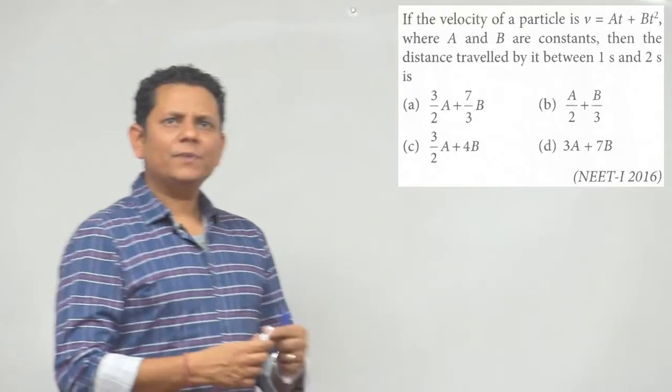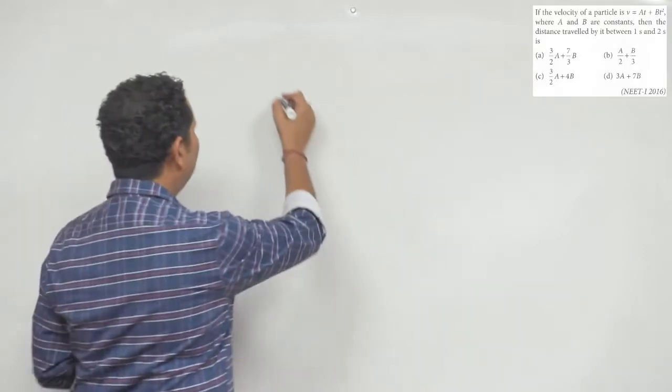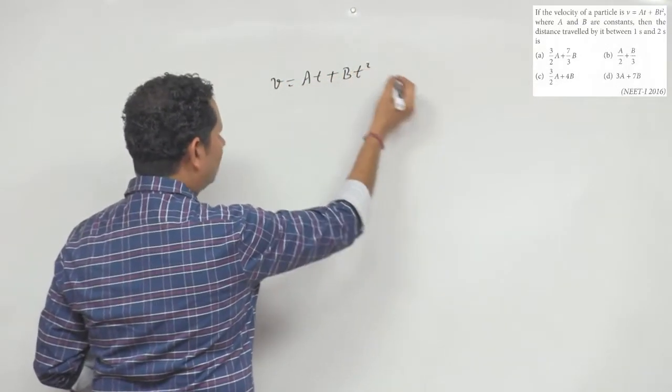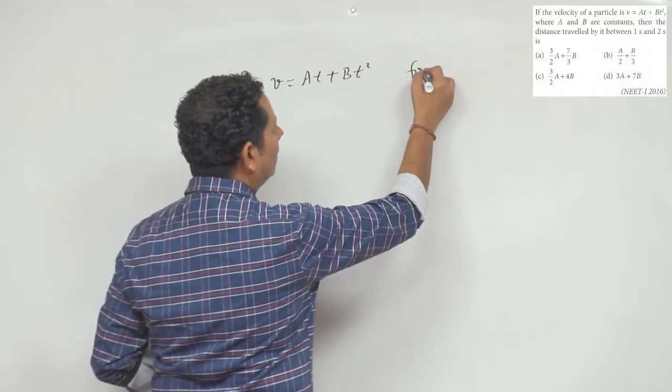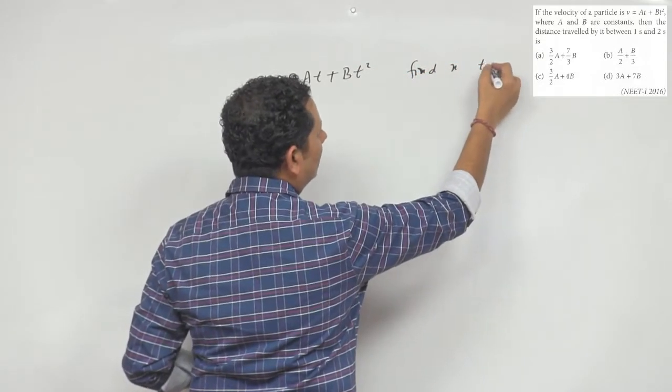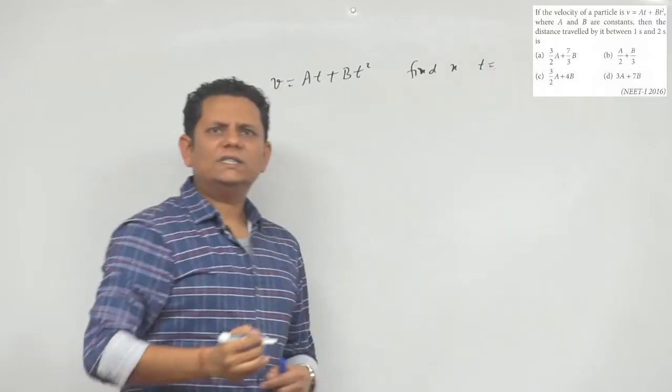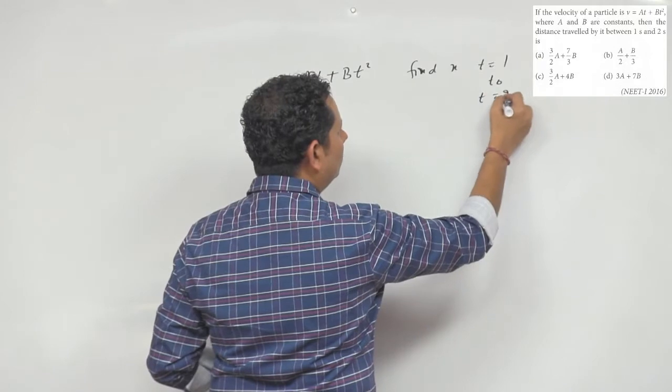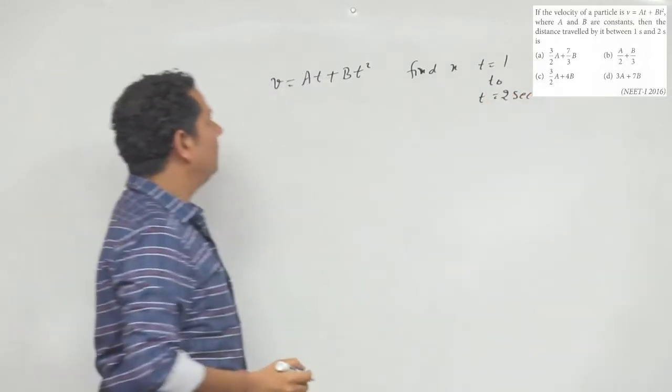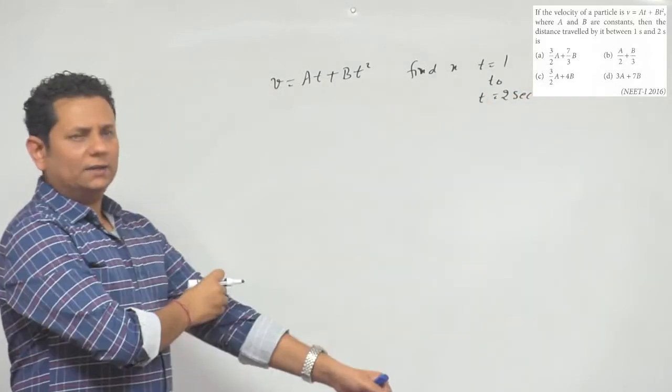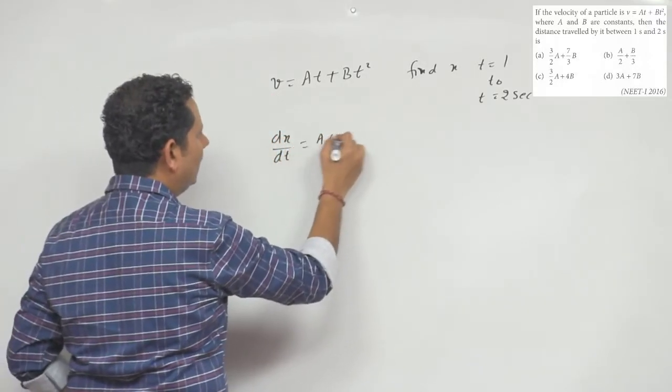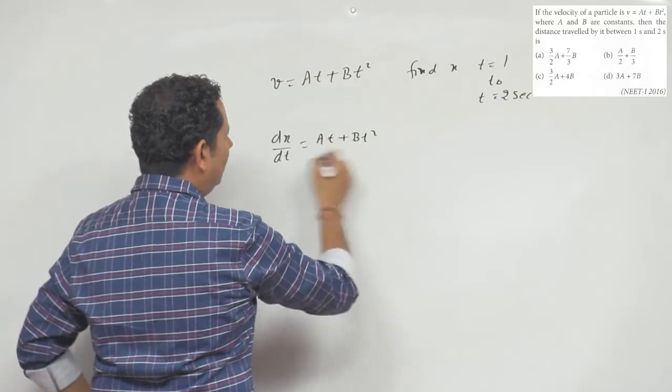We have v equal to At plus Bt square. We need to find x between t equal to 1 to t equal to 2 seconds. So from t equal to 1 to t equal to 2 seconds.